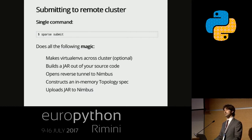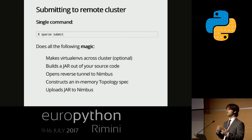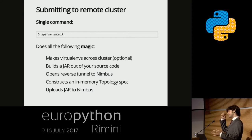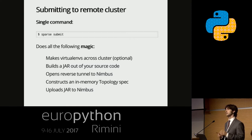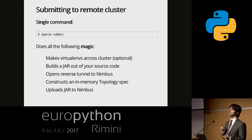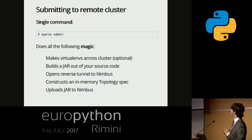Once you have a remote cluster set up and configured, you can simply type sparse submit. There's a small config JSON file where you specify the hostname and parameters. It makes a virtualenv across the cluster, installs requirements, builds a jar from the source code, opens a tunnel to the Nimbus, constructs the topology spec in memory, and uploads the jar to Nimbus and starts the topology. It takes a lot of the headache out of deploying — no worrying about jars, out-of-date requirements, or writing a fab file to manually update virtualenvs. There are also many other diagnostic and functional commands to explore.